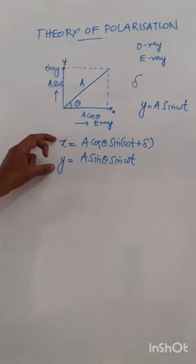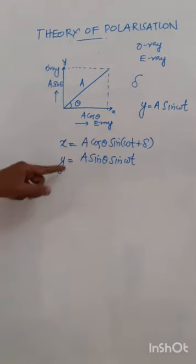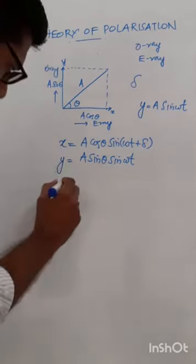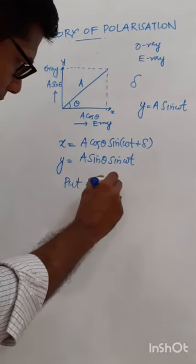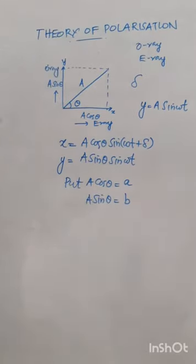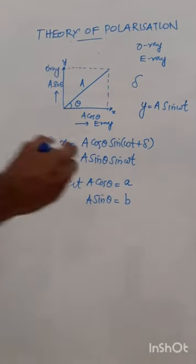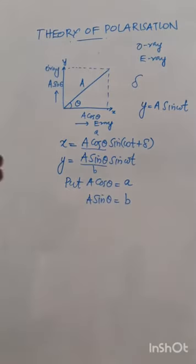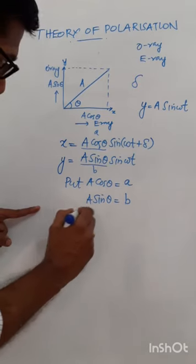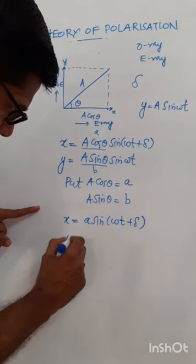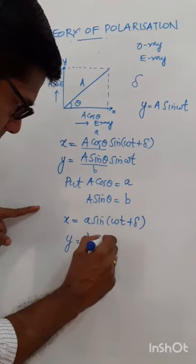So x represents E ray and y represents O ray. Now we make some simple substitutions for ease of calculation: we put A cos(theta) = a and A sin(theta) = b. So the two equations can be rewritten as x = a sin(omega t + delta) and y = b sin(omega t).